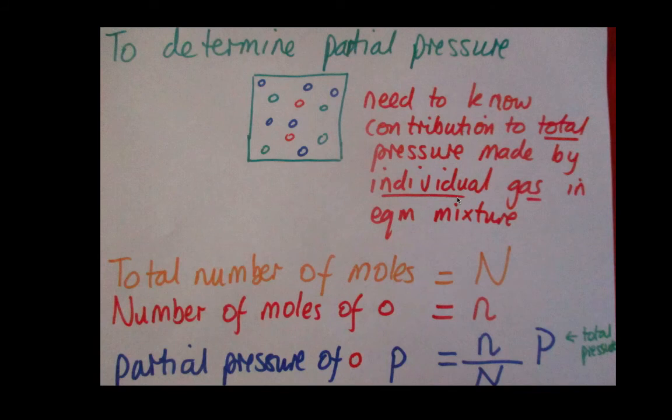So, let's call the total number of moles N. Okay, so we've got N number of moles in our green box. And, we want to know what the partial pressure of our red gas is. So, say we've got a little n number of moles of our red gas. So, we've got a smaller number of moles of our red gas within a larger number of moles of our mixture.